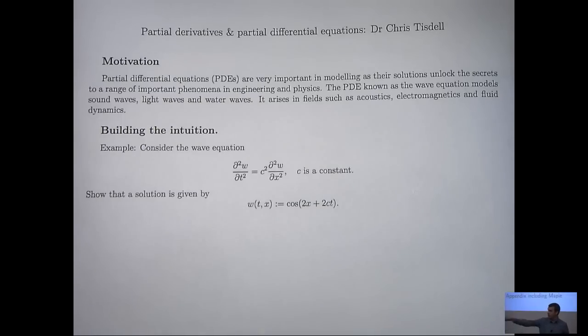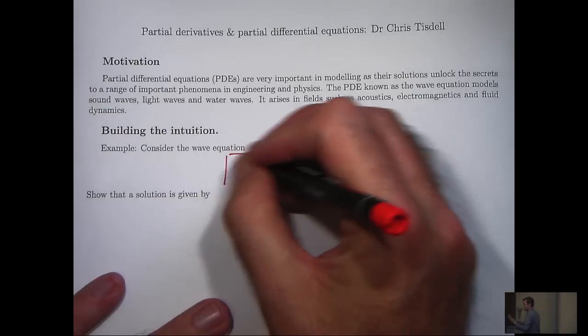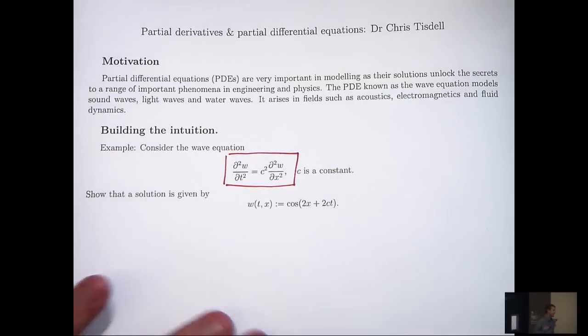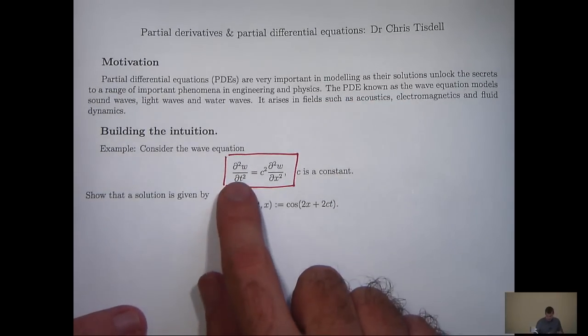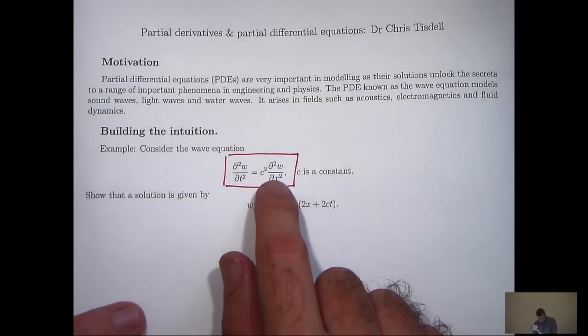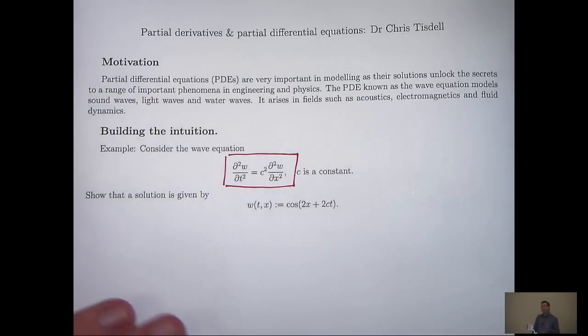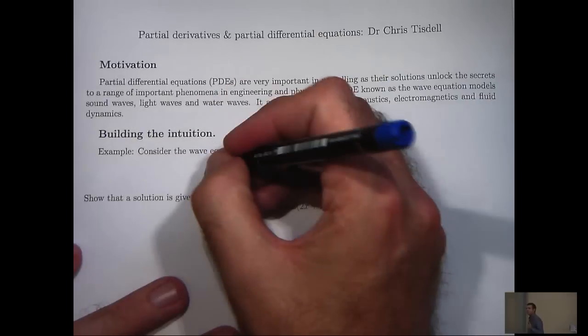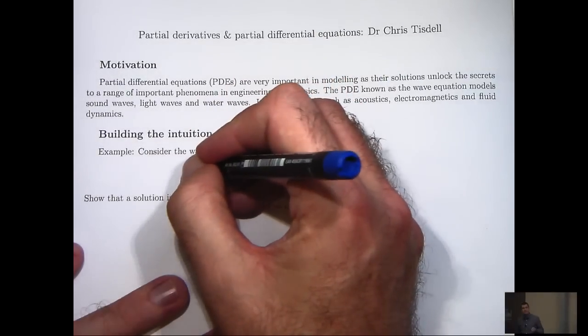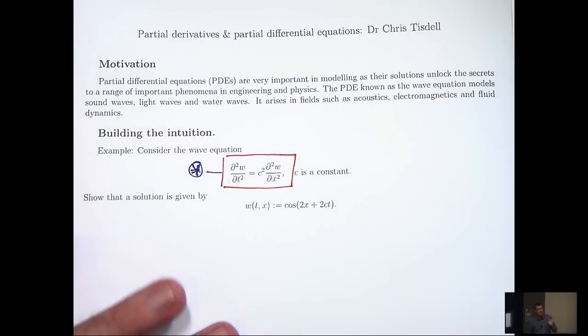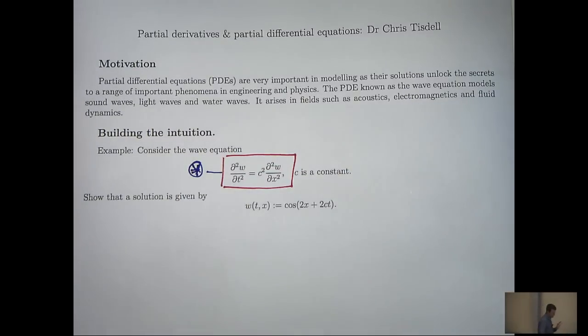The equation that we're going to look at is called the Wave Equation. You can see that this equation involves partial derivatives of some function w. For this reason, these types of equations are referred to as partial differential equations.